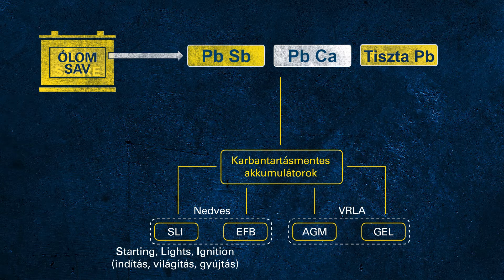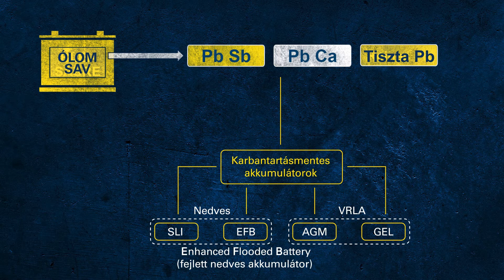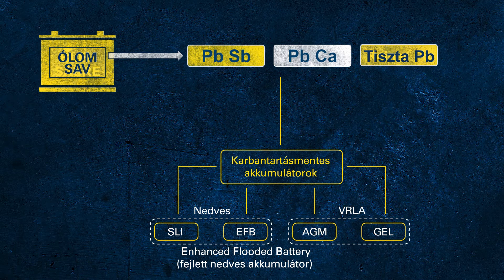SLI stands for starting, lights, and ignition, which describes the main duties of a conventional starter battery in a conventional vehicle. EFB stands for enhanced flooded battery. This is not a protected term, so any change applied to an SLI might be called an EFB. Usually EFB indicates a flooded battery with improved cycling capabilities. As this is still a flooded battery, it is not as robust as VRLA technology.